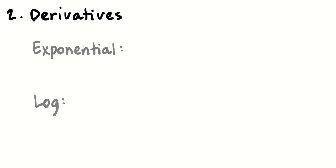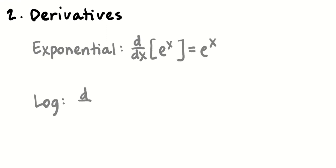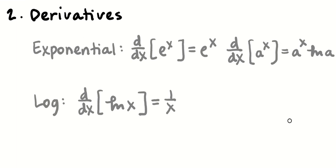We need to know our exponential and log derivatives. The derivative of eˣ is eˣ, and the derivative of ln(x) is 1/x. We also need to know the derivative of exponentials that aren't eˣ — for example, the derivative of 2ˣ is 2ˣ times ln(2). You can derive this by rewriting 2 as e^(ln 2 · x) and applying the chain rule. It's rare but it can come up.